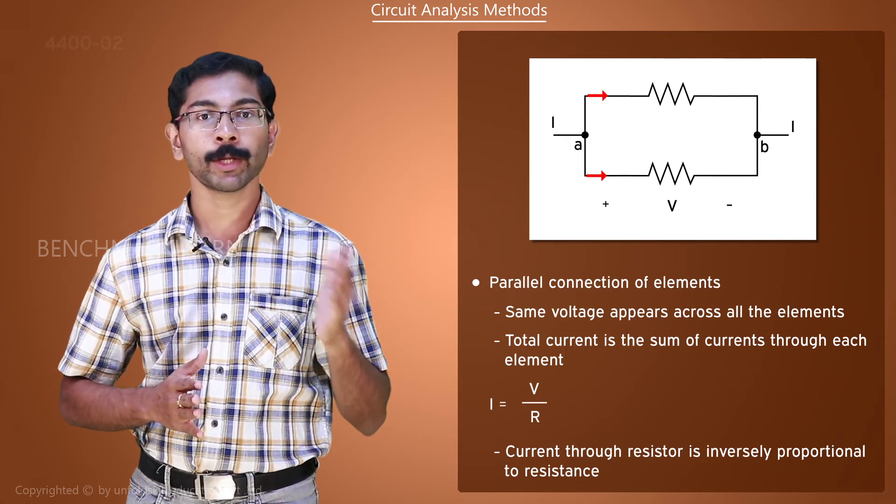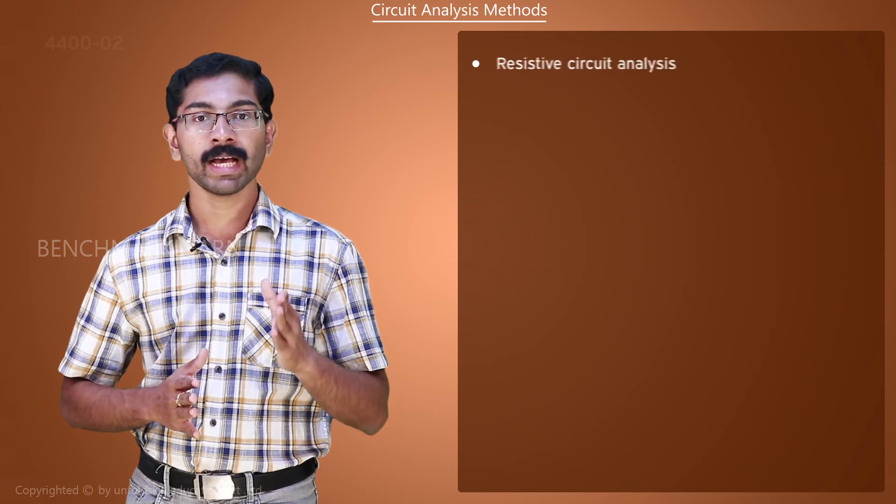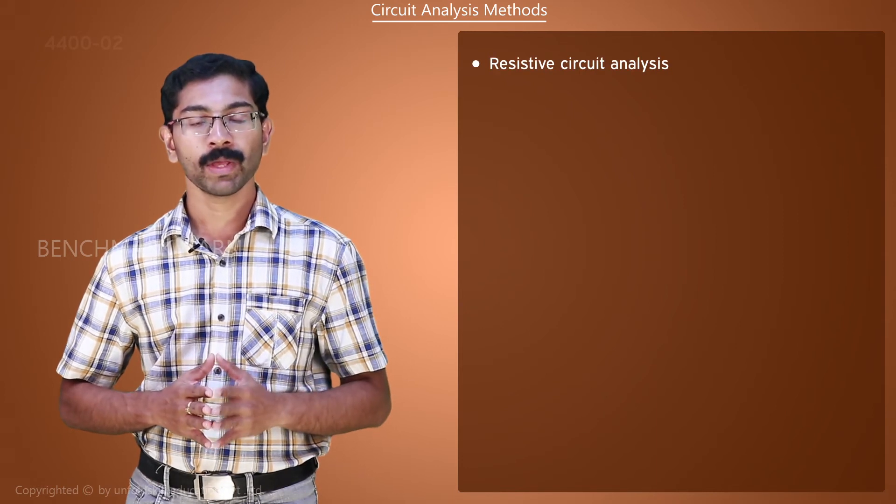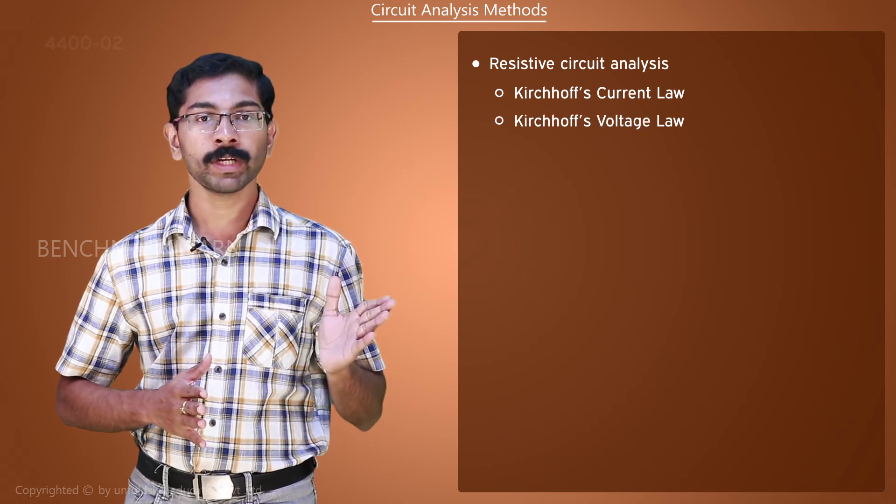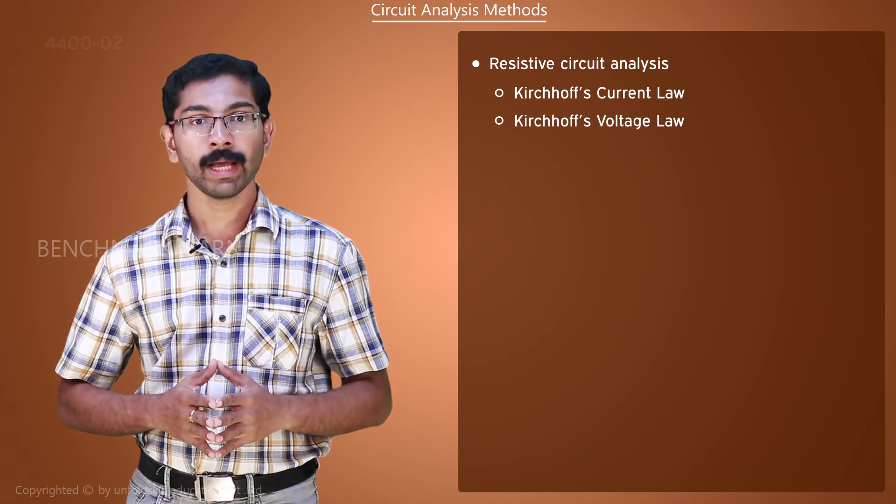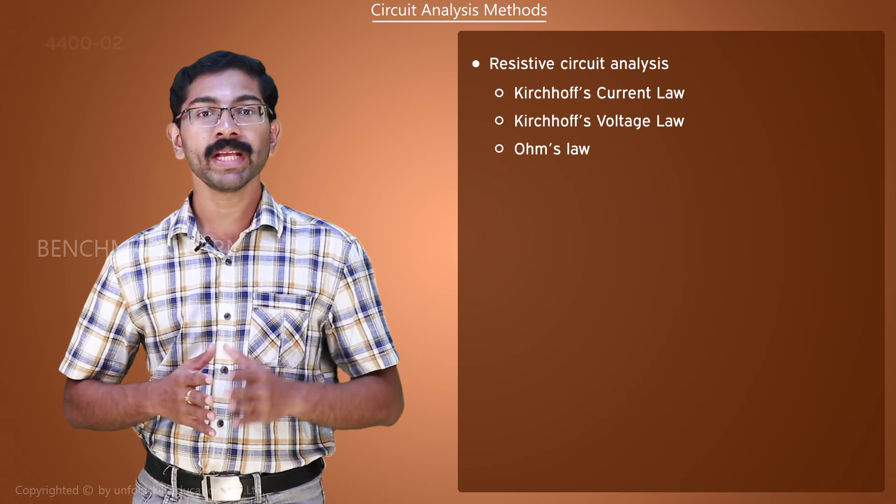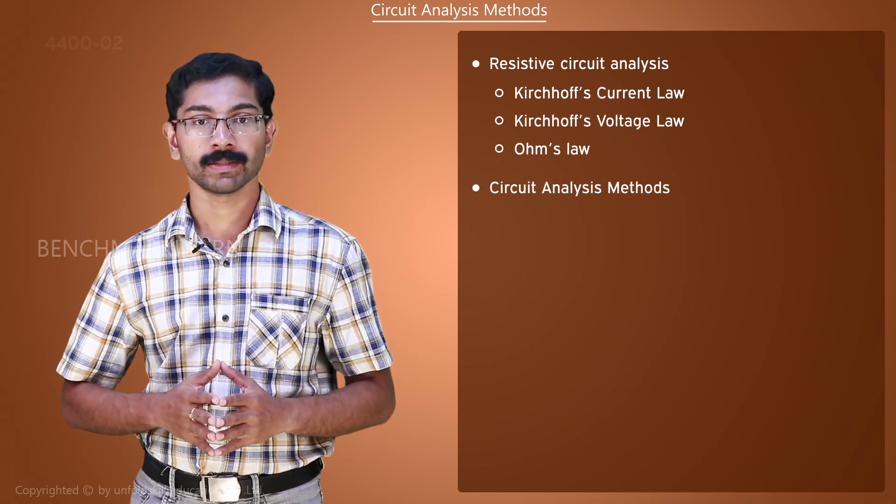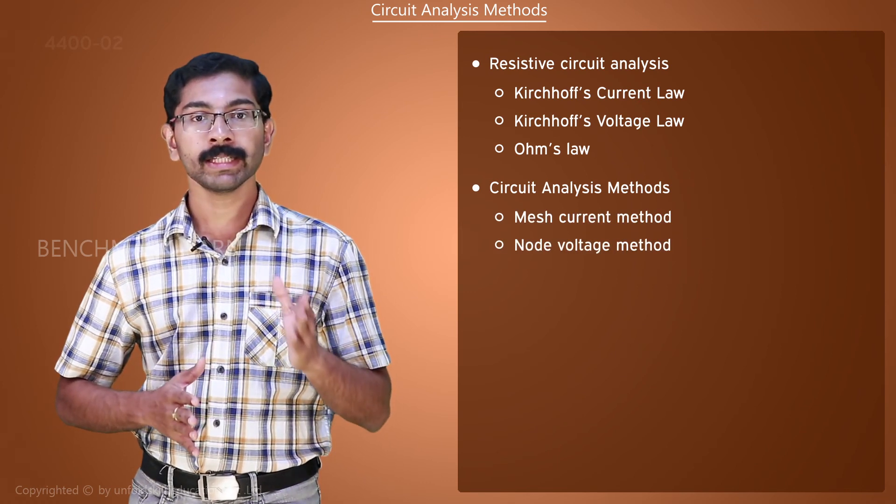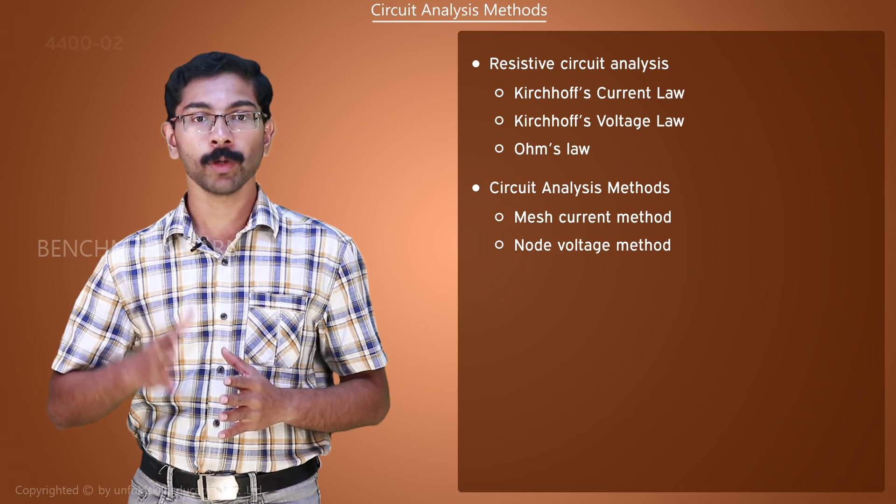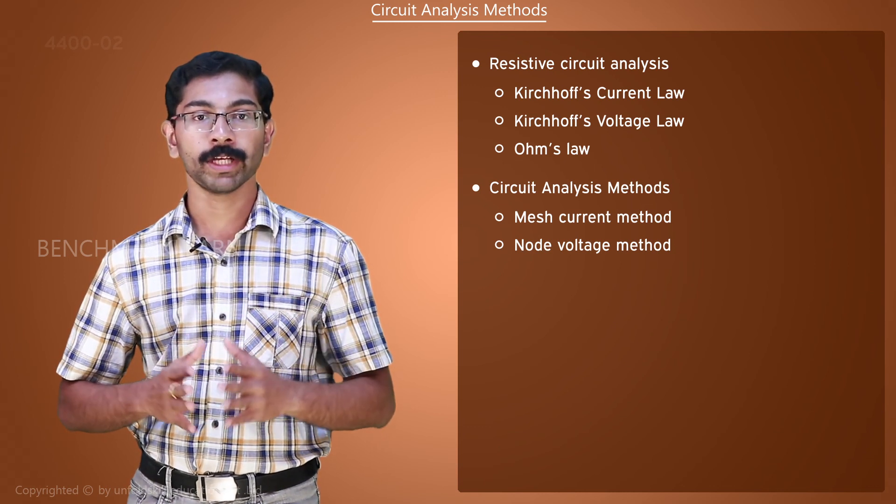Let us come back to circuit analysis. The basic rules used in analysis of resistive circuits are Kirchhoff's current law or KCL, Kirchhoff's voltage law or KVL, and Ohm's law. There are two basic methods for circuit analysis: mesh current method and node voltage method. These methods use Kirchhoff's laws to solve for the circuit variables current and voltage.